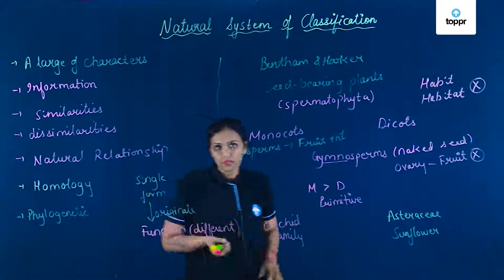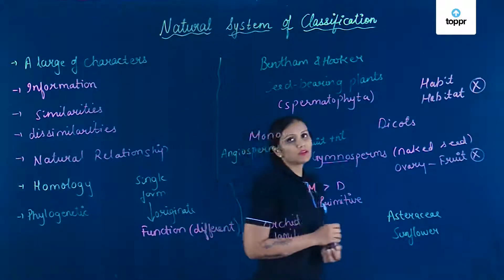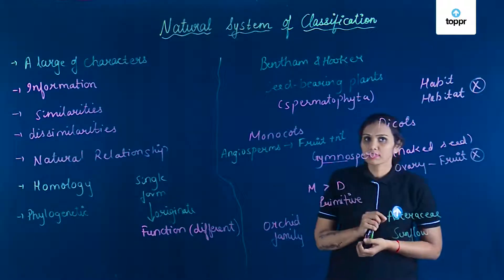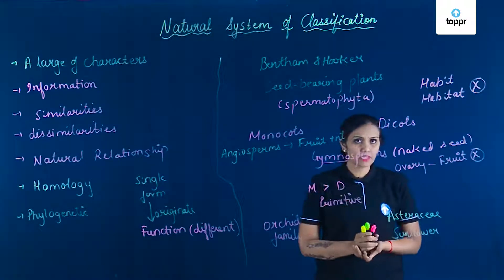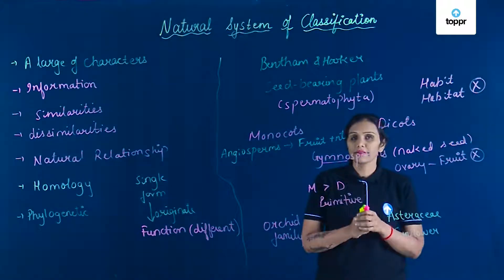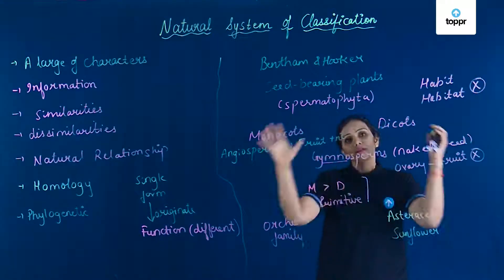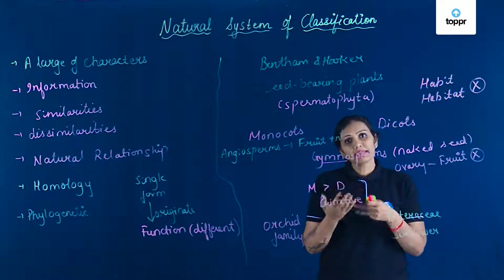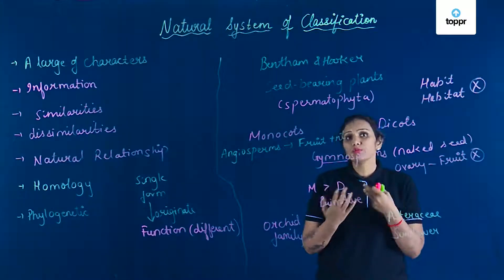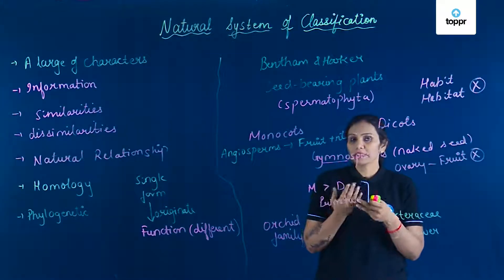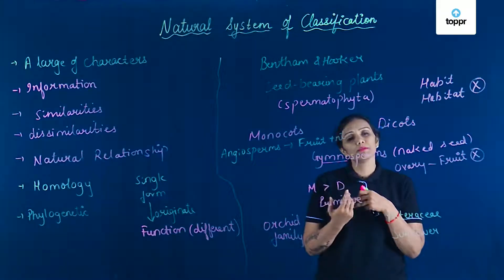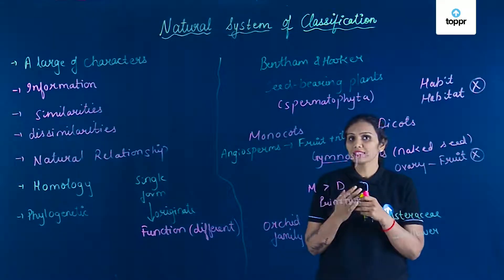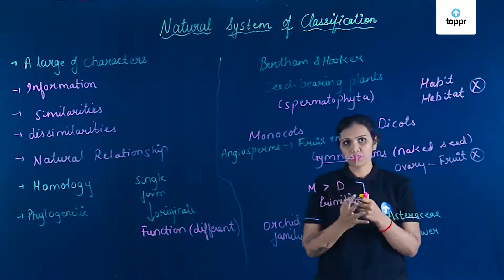This is the demerit of the Bentham and Hooker system of classification. Otherwise, this system is well-developed, quick hai, easy hai. Evolutionary history batata hai. Humein uski structural, anatomy, genetics ke baare mein information deta hai.